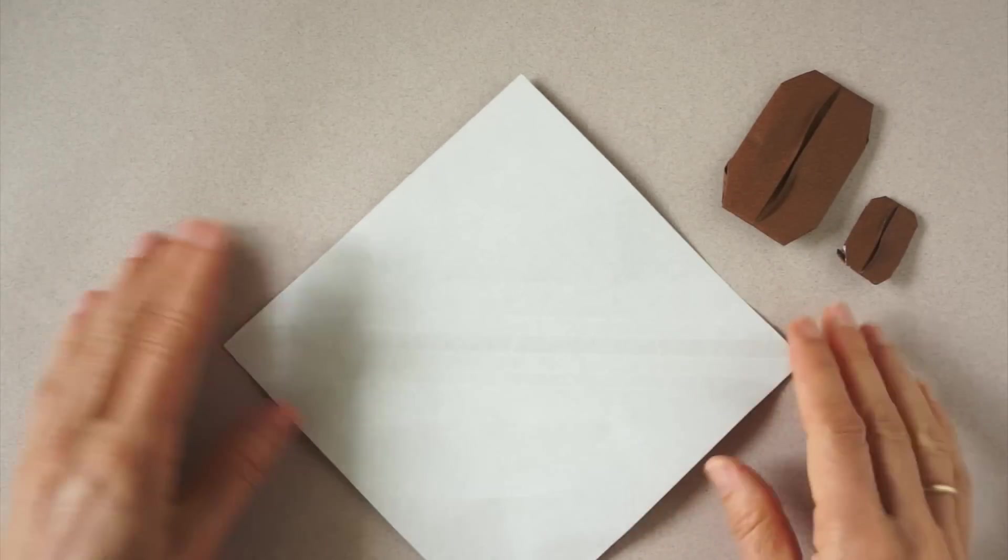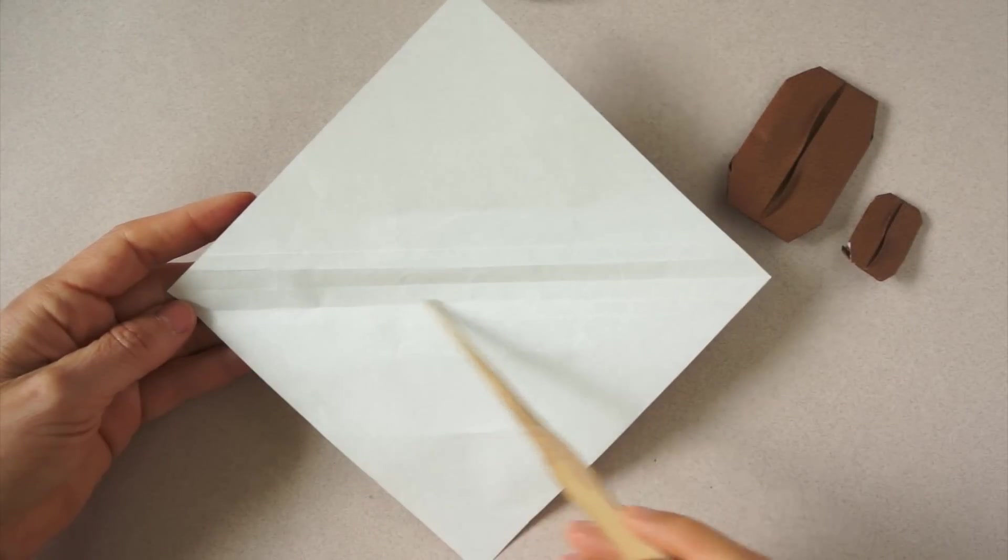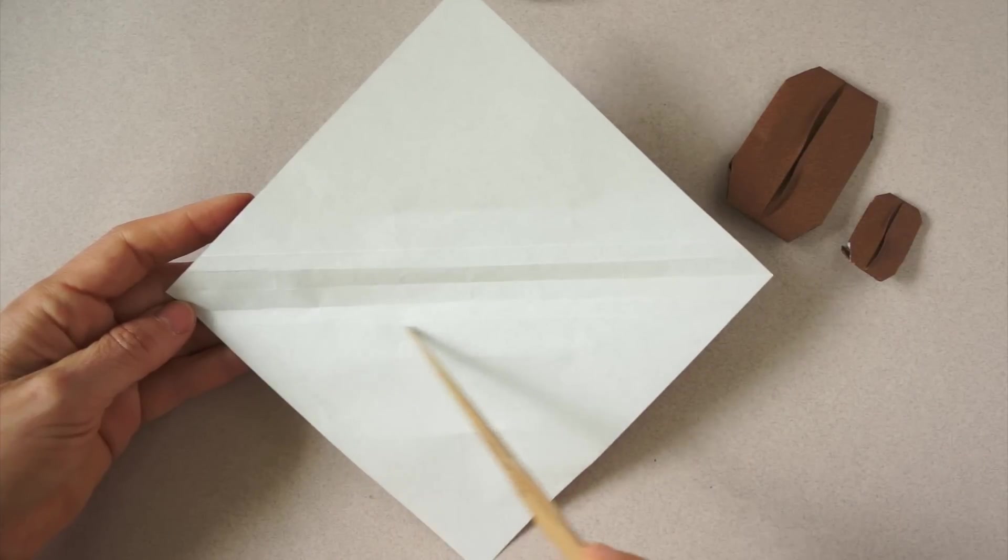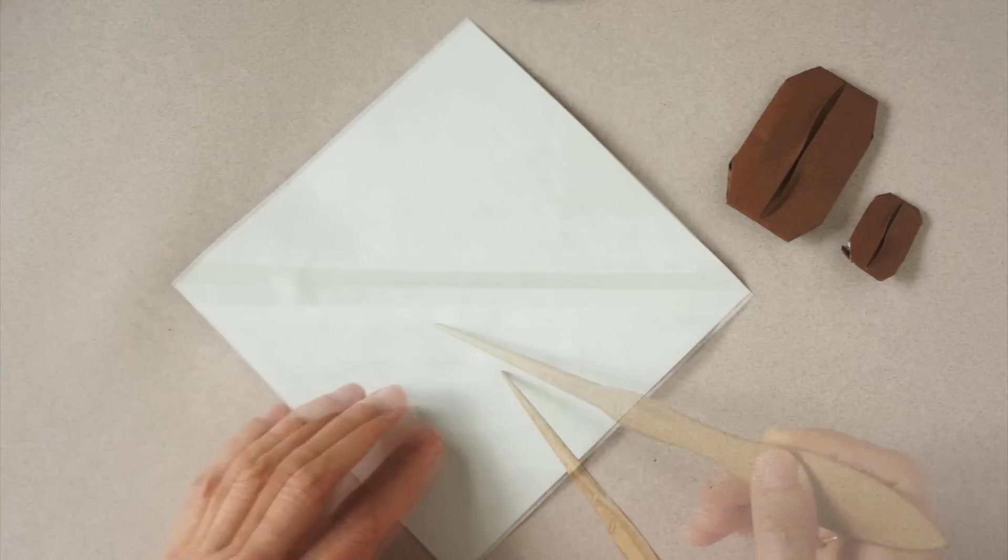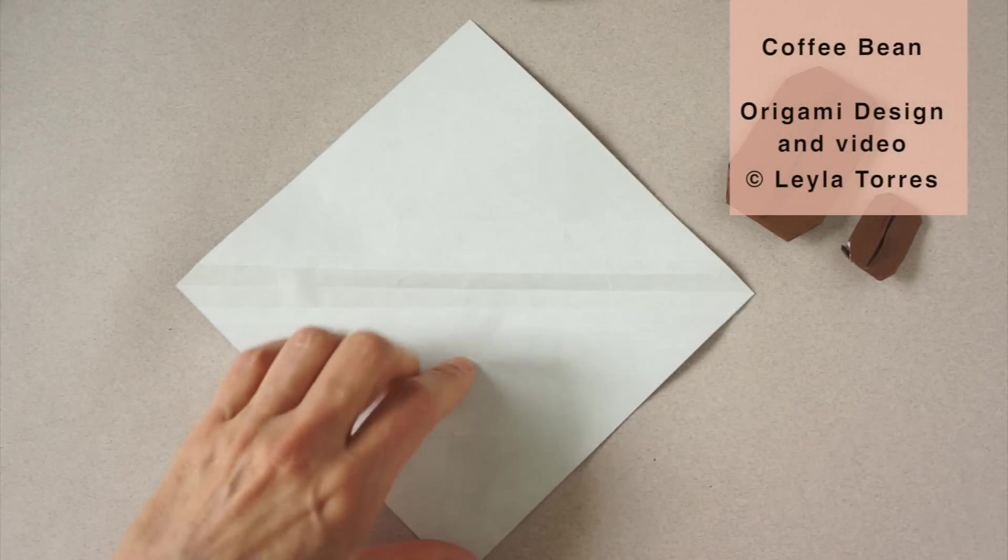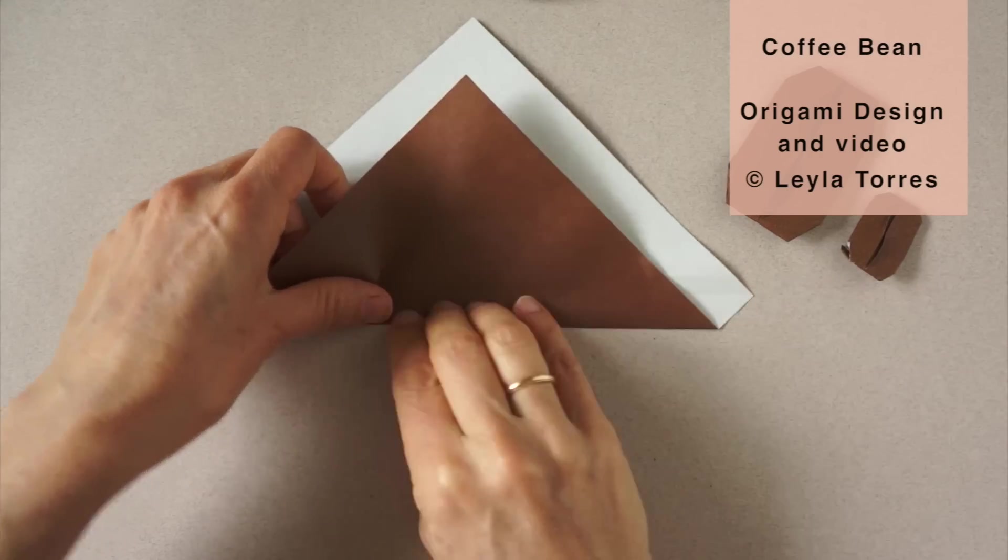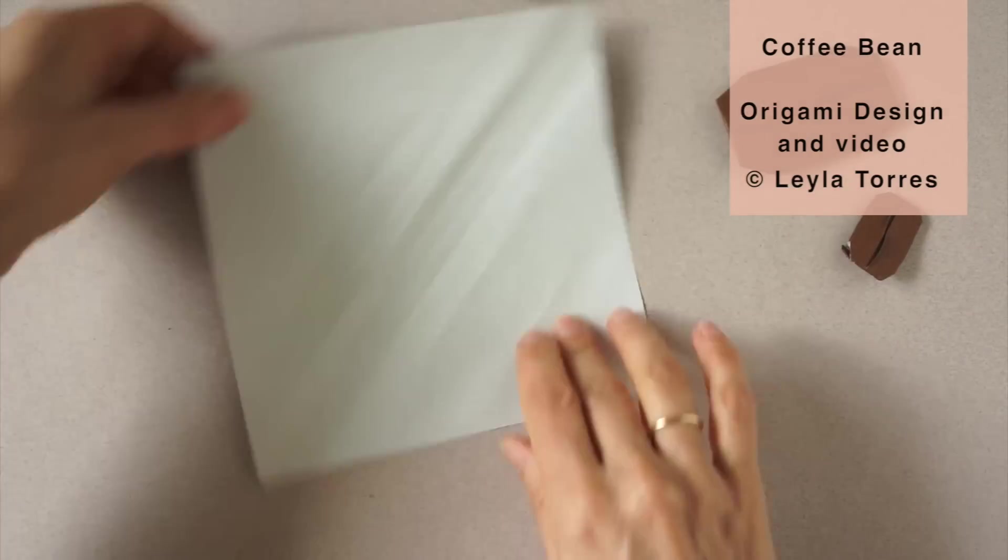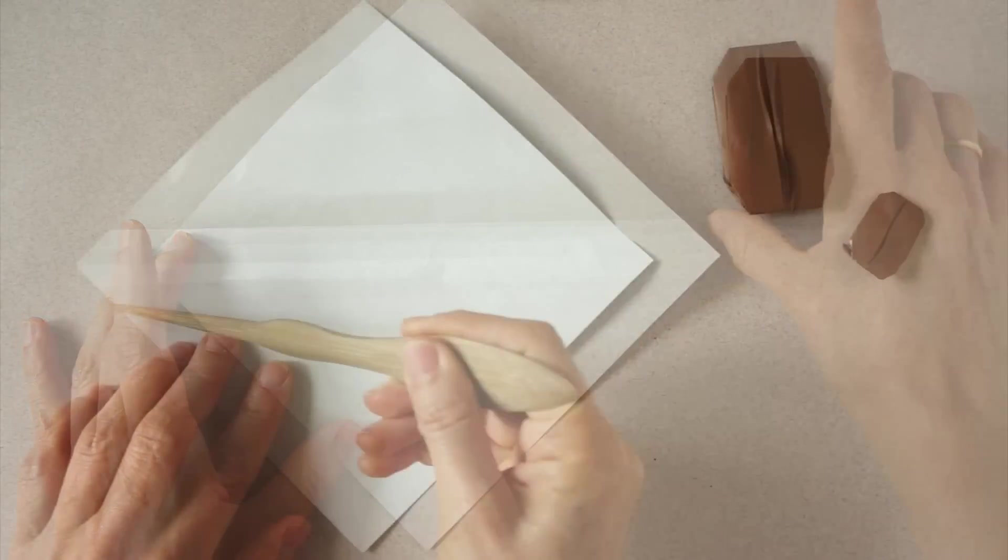Unfold. We have two long folds on each side of the center. We are going to reinforce the outer one as a valley. Rotate and repeat.